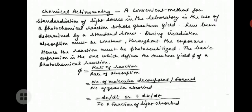Now, what is chemical actinometry? A convenient method for standardization of a light source in the laboratory is the use of a photochemical reaction whose quantum yield has been determined by a standard source. During irradiation, absorption must be constant throughout the exposure; hence the reaction must be photosensitized. The basic expression defines the quantum yield phi of a photochemical reaction: phi equals rate of reaction upon rate of absorption, or phi equals number of molecules decomposed or formed upon number of quanta absorbed, or phi equals (−dc/dt or +dx/dt) divided by I₀ times the fraction of light absorbed.